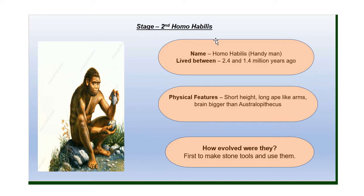Second stage — Homo habilis, also known as handyman. They lived between 2.4 and 1.4 million years ago. They were short in height with long arms and legs like apes. Their brain size was bigger than Australopithecus, so they were more intelligent than them. They were the first to make stone tools and use them — they used these tools to protect themselves from wild animals and for gathering food. They were mostly vegetarians, dependent on plants for food, but sometimes they ate meat too.